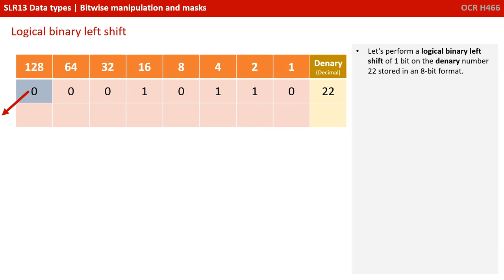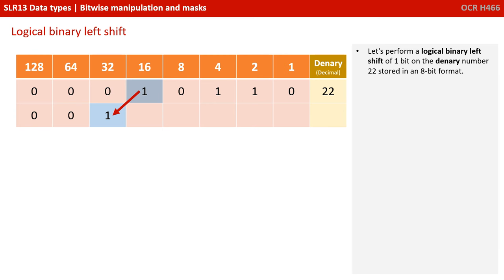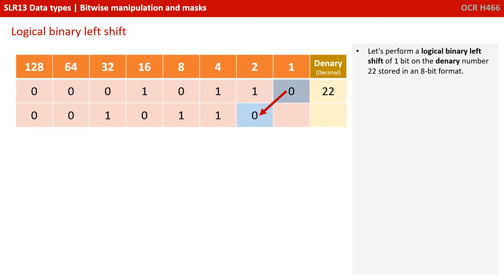The bit in the 128 column is going to disappear off the left-hand side. The bit in the 64 column is going to move over, left shifted one position, so that it becomes a zero. The bit in the 32 position is going to shift one place to the left. The bit in the 16 position shifts to the left. The bit in the 8 position shifts one space to the left, the same with the 4 position, the 2 position, and the 1 position.